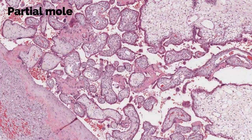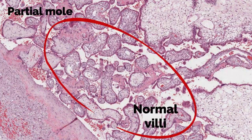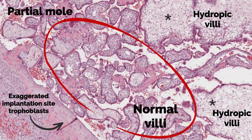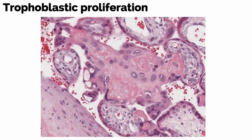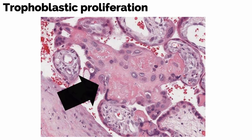Trophoblasts are the outer cells of a blastocyst and differentiate into the chorion, or the fetal part of the placenta. Chorionic villi are finger-like projections from the chorion that allow for diffusion between fetal and maternal blood. In partial molar pregnancies, there is a mixture of normal villi — circled in red at the center of the slide — and hydropic villi, labeled with an asterisk. You can also have exaggerated implantation site trophoblasts, and on higher power, trophoblastic proliferation between the villi.